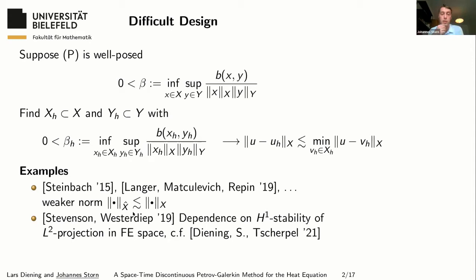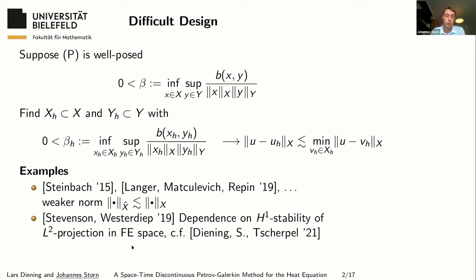It shows a very interesting connection to the discrete inf-sup condition and the H1 stability of the L2 projection into the underlying Lagrange finite element space. This is a very interesting topic on its own with many publications going back to Crouzet-Thomé, Bramble, Pasciak-Steinbach, and Carstensen. The most recent result goes back to Lars Diening, Taviat Scherpe, and me, where we prove this H1 stability for adaptively refined meshes and Lagrange spaces of arbitrary order in one and two space dimensions. It is very likely to hold in three space dimensions, but there is one result on adaptive mesh refinement missing.